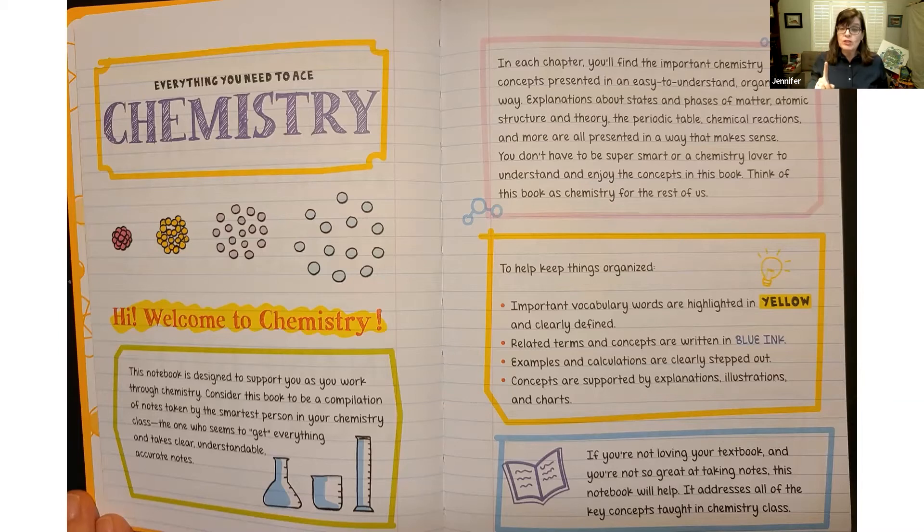In fact, what I want you to do as you go through it is remember to look at the words that are highlighted in yellow because those are important vocabulary words and they're explained. They're defined in the text because you may need to know them for your class. Look for the blue ink because that has related terms and concepts that are written there. And then be sure to take a look at some of the examples and the calculations that we have where we go step by step by step and walk you through some of the maybe more difficult concepts and calculations so you can see what's happening. That's always helpful, right?